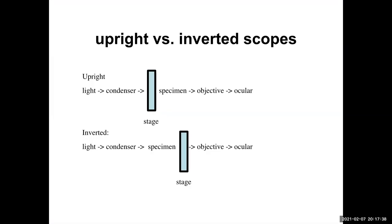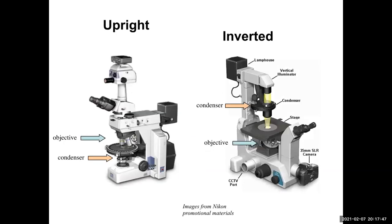Let's look at some light paths on some microscopes. These might look complicated but they're not. On the back you see some big squares — those are the light sources, encased in a little cage because they get super hot. These are two types of scopes: one is upright and one is inverted. This is a fundamental thing about scopes and one of the first things you'll notice when you look at one. Is it upright or is it inverted?